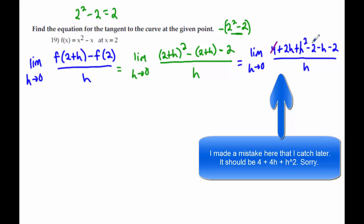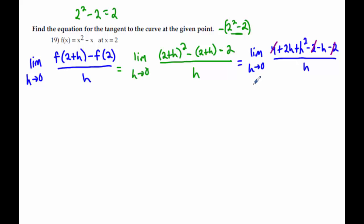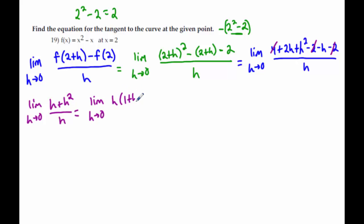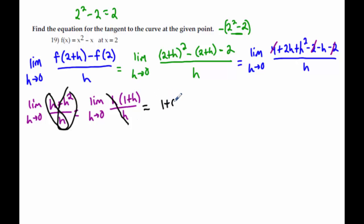We need to FOIL (2 plus h)(2 plus h): that's 4 plus 4h plus h squared. Distributing the negative gives negative 2 minus h, and then minus 2 is still at the end. The 4 and two negative 2s make 0. The 4h and negative h give 3h, and we still have h squared on top over h. We factor the h out on top to cancel with the h on the bottom: h times (3 plus h) over h. If you divide h into both terms, you get 3 plus h. Now plug in 0: that's 3 plus 0, which is 3.